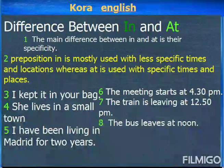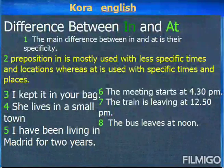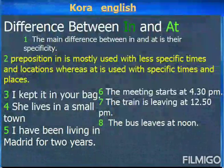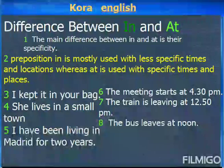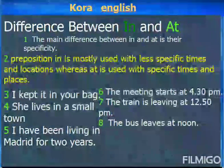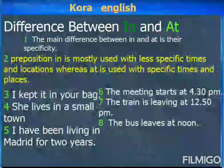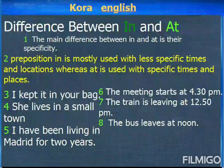Number six: the meeting starts at 4:30 p.m. When you talk about a specific time like 4:30 p.m., you use 'at'. Number seven: the train is leaving at 12:50 p.m. — again a specific time, so we use 'at'.